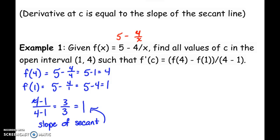We need to take our derivative. F prime of x would be, the derivative of 5 is 0. The derivative of negative 4 over x, remember we can write that as 4x to the negative 1. So we've got negative 4 times, bring down the exponent, subtract 1 from the exponent. So our derivative is 4 over x squared.